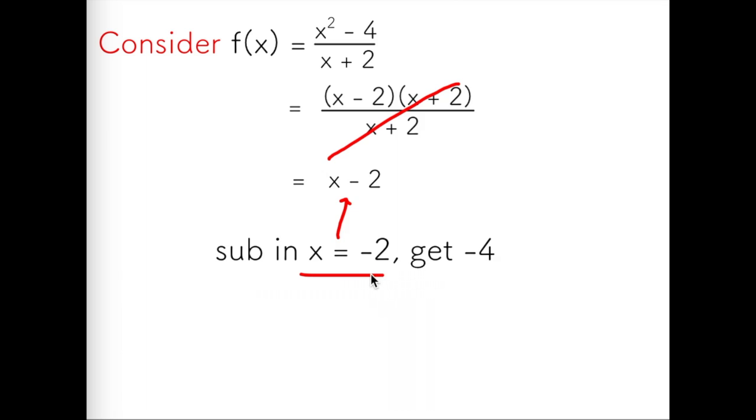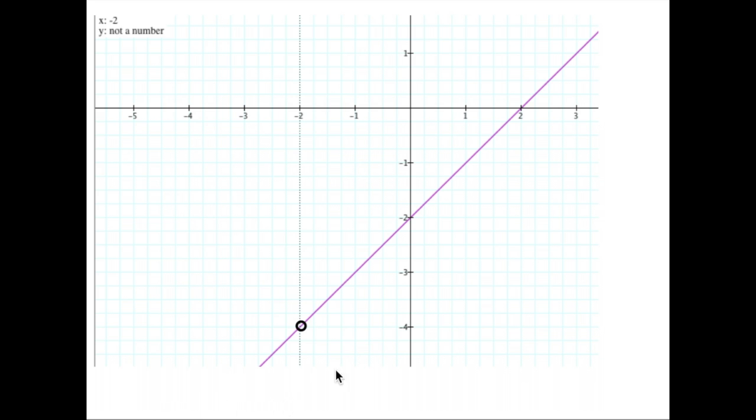So this tells me the coordinates of my hole are at negative 2, negative 4. That should explain what I'm seeing on my graphing calculator. At negative 2, negative 4, I have an undefined value.